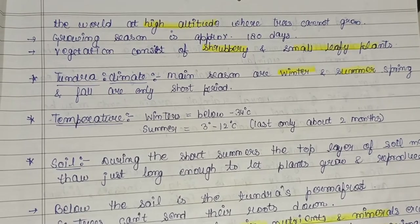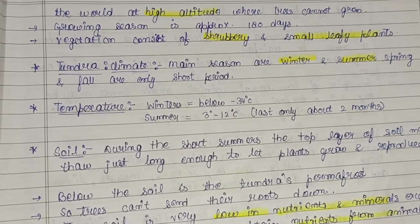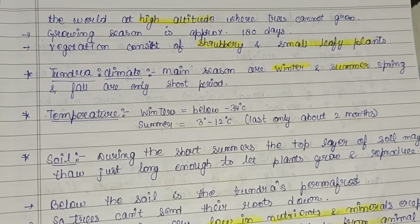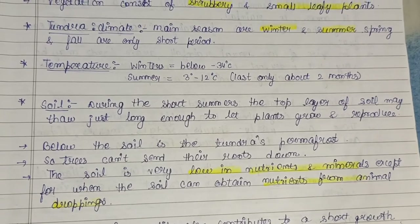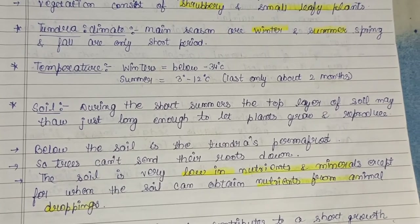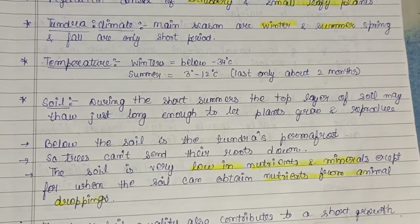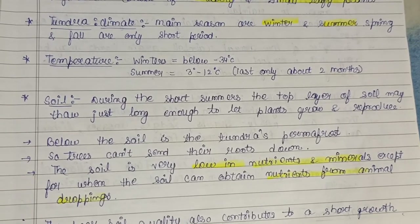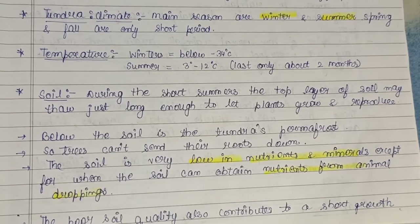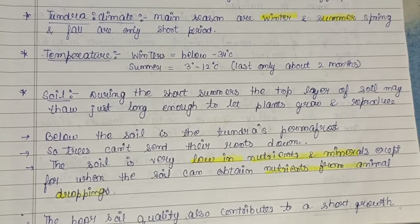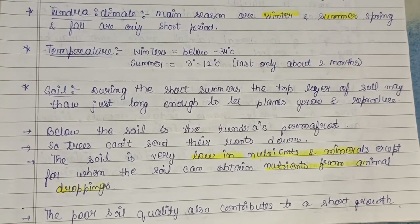The climate of tundra has two main seasons: winter and summer; spring and fall are only for short periods. In winter, temperature goes below minus 34 degrees Celsius; in summer, 3 to 12 degrees Celsius, lasting only about two months. Regarding soil, during the short summer the top layer may thaw just long enough to let plants grow and reproduce. Below that is permafrost, so trees can't send roots down. The soil is very low in nutrients and minerals, obtaining nutrients mainly from animal droppings.